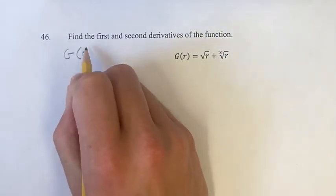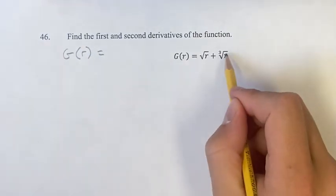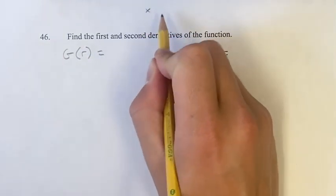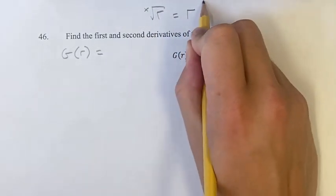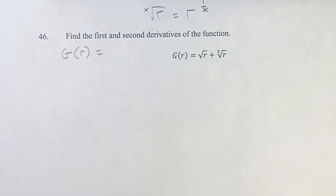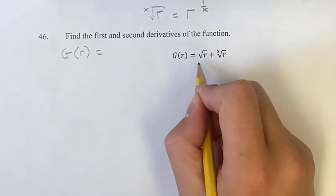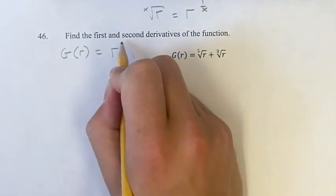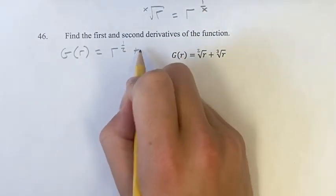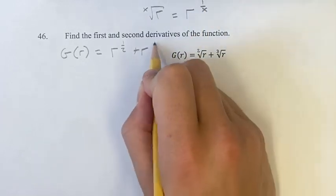So rewriting g of r, remember, for any root, let's say we have the x root of r, where x is just some number, this is going to be equal to r to the 1 over x. So doing that here, we have the square root, so just imagine a 2 there. This is going to be r to the 1 over 2, plus r to the 1 over 3.